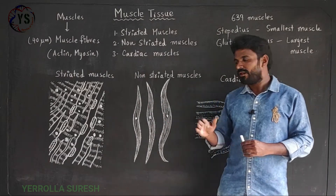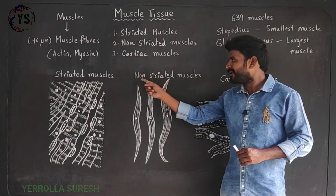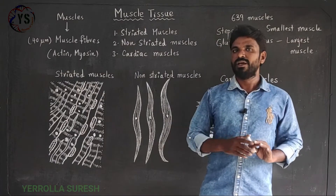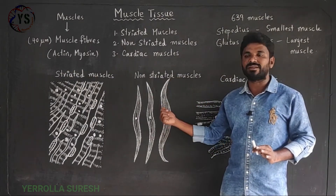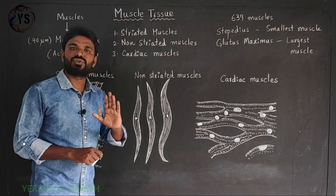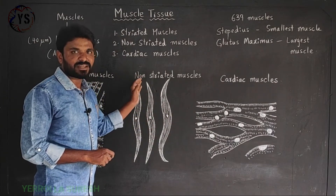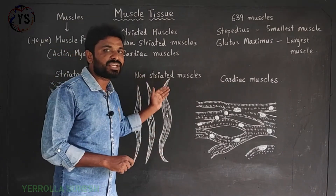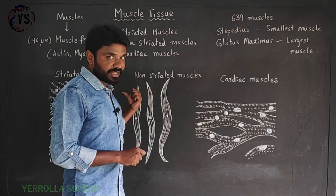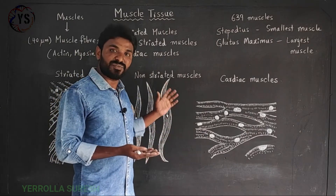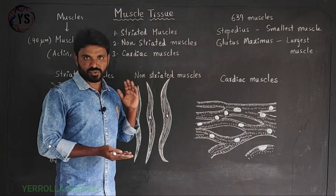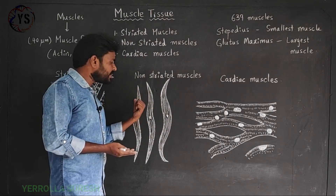Non-striated muscles are the muscles which do not have any striations on their surface. Due to the absence of striations they appear smooth, so they are also called smooth muscles. Non-striated muscles do not have more nuclei — they have only a single nucleus. This is a key difference: striated muscles contain more nuclei, while non-striated muscles have only a single nucleus.